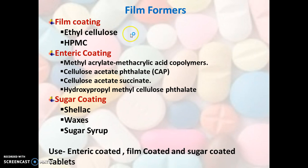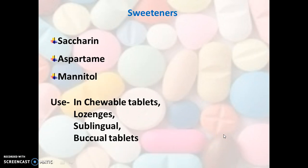Then there are film formers used for film coating purposes. Examples are ethyl cellulose and HPMC. For enteric coating, where tablet dissolution is desired at intestinal pH, examples are methyl acrylate methacrylic acid copolymer, cellulose acetate phthalate, and hydroxypropyl methylcellulose phthalate. For sugar coating, used for protection and to mask taste, examples are shellac, waxes, and sugar syrup. All these film formers are used to form enteric coated, film coated, and sugar coated tablets.